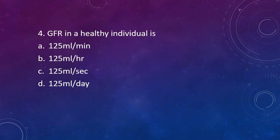Question 4. GFR, that is glomerular filtration rate, in a healthy individual is 125 ml per minute, 125 ml per hour, 125 ml per second, or 125 ml per day.